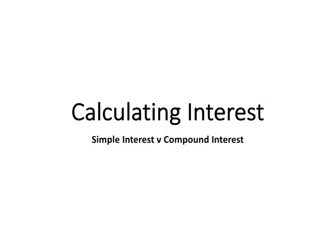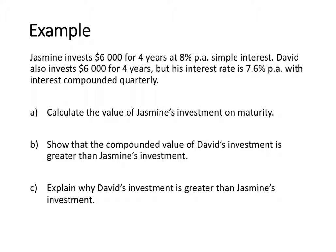In this video, we're going to have a look at calculating interest and comparing simple interest to compound interest. Jasmine invests $6,000 for 4 years at 8% per annum simple interest. David also invests $6,000 for 4 years, but his interest rate is 7.6% per annum compounding quarterly. We are asked to calculate the value of Jasmine's investment, calculate the value of David's investment, and explain why David's investment is greater than Jasmine's even though he has a lower interest rate.